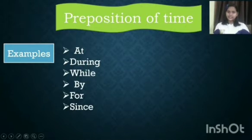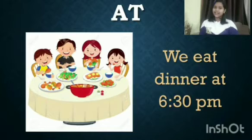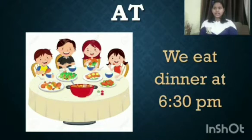There are many more, but in this class I am going to explain six only. The preposition of time 'at' is used for a point in time. For example, 'We ate dinner at 6:30pm.' Here, the family eats dinner at a fixed time.